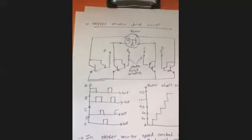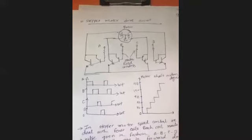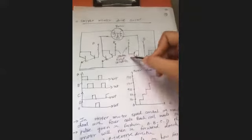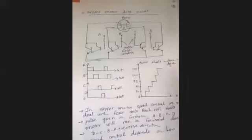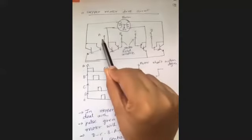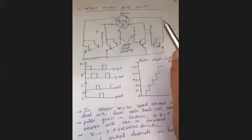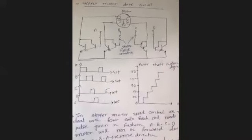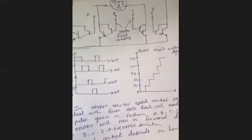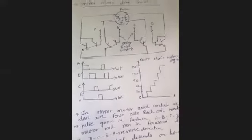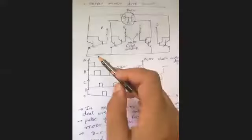The next topic is the stepper motor drive circuit. The stepper motor has a stator with four windings — A, B, C, and D. The stepper motor is driven by pulses at the input, and is programmed using a microcontroller, processor, or PLC. The pulses are applied one by one.